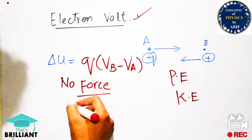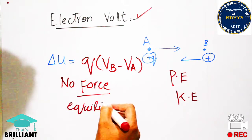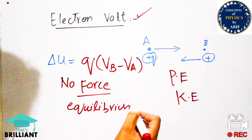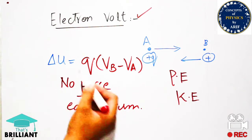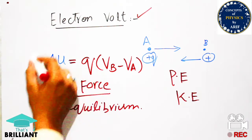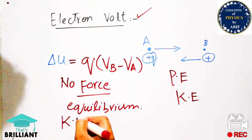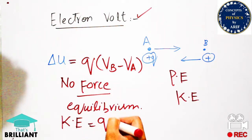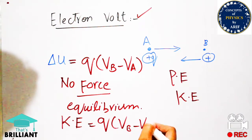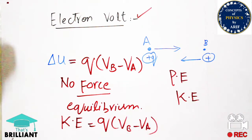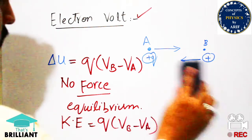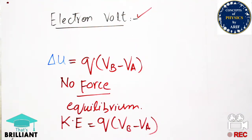When these two point charges are present and there is a distance between them, they have some potential energy. If they are moving in equilibrium motion, then there will be no force applied on them. When no force is acting on a body and the two charges are in equilibrium, this energy is converted into kinetic energy, so kinetic energy is equal to q into vb minus va.